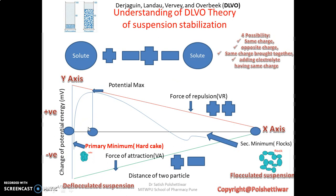The next topic is understanding of DLVO theory. This theory was discovered by four scientists, and that's why it is called DLVO theory. This theory is very important to make a chemically and physically stable suspension, because suspensions are thermodynamically unstable and you have to make them stable using certain principles.